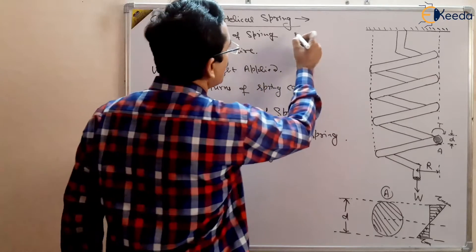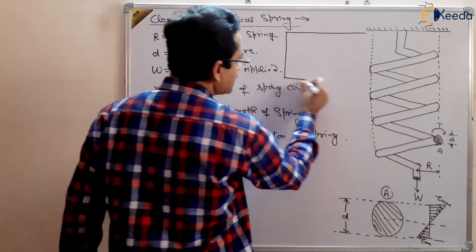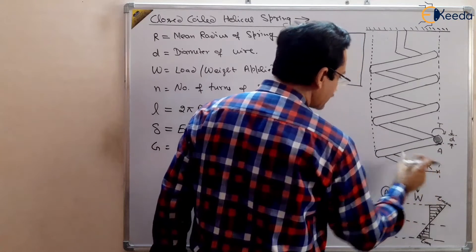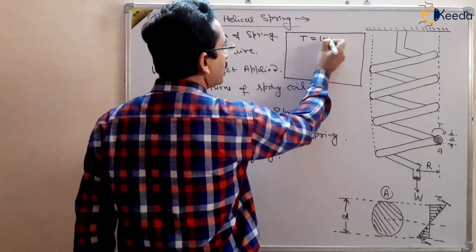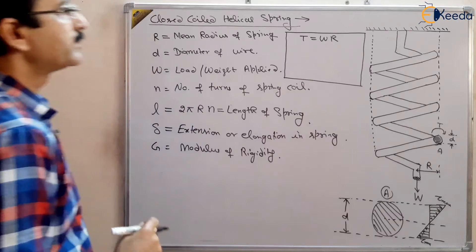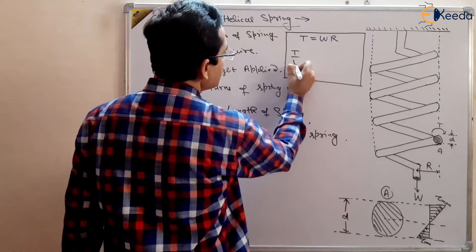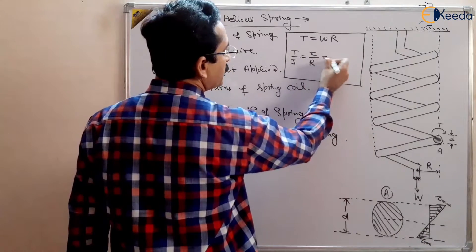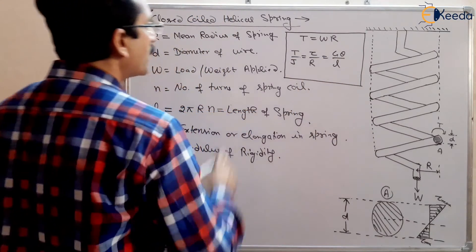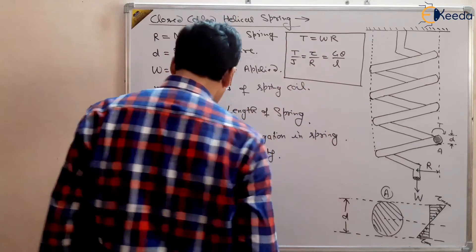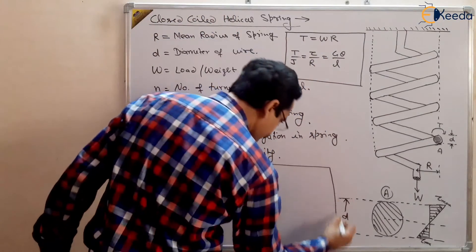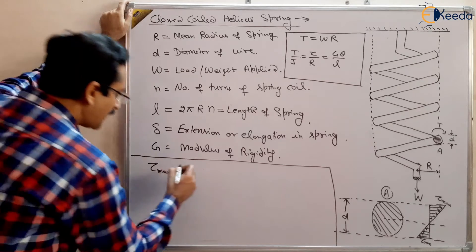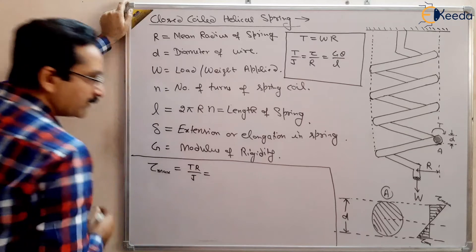What is the torque? Torque is force multiplied by distance. So force W is acting at a distance R, giving torque T = WR. We know the torsion equation: T/J = τ/r = Gθ/L, where τ will be τ_max because it is acting at the outer radius. So τ_max = TR/J, where T is the torque on the spring wire.